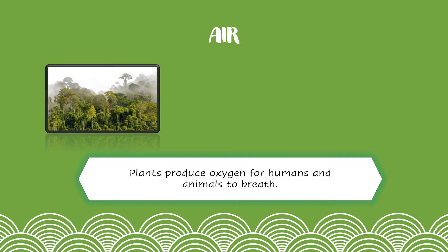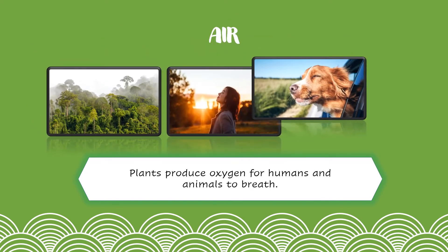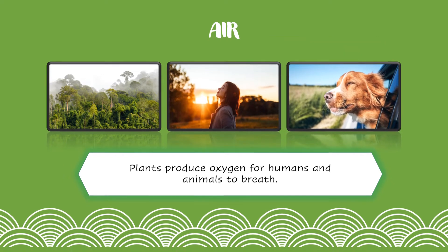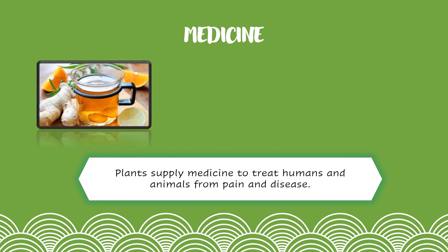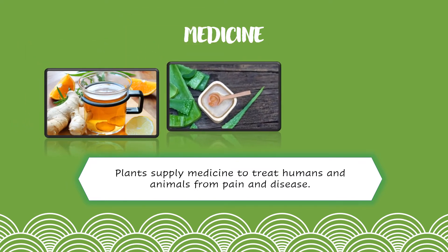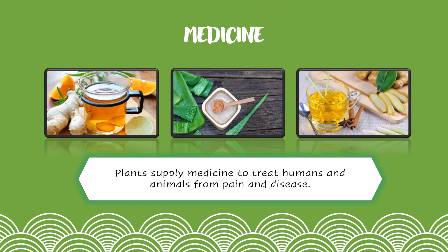The third one is medicine. Plants can be used as medicine. For example, ginger, aloe vera, and lemongrass.